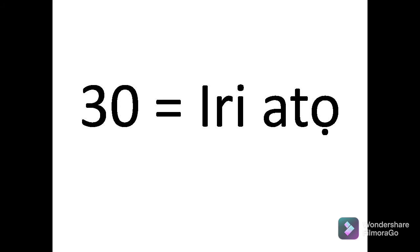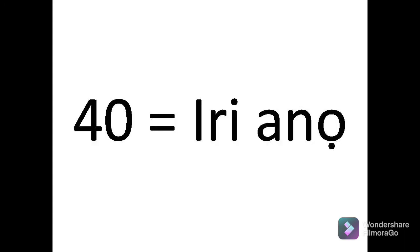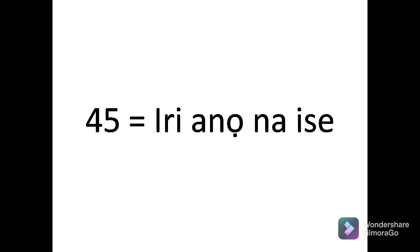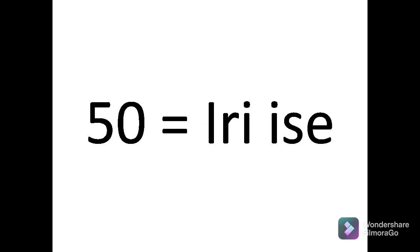30 is Iri ato. 35 is Iri ato na isse. 40 is Iri ato. 45 is Iri ato na isse. And I want you to repeat after me as I pronounce the numbers.